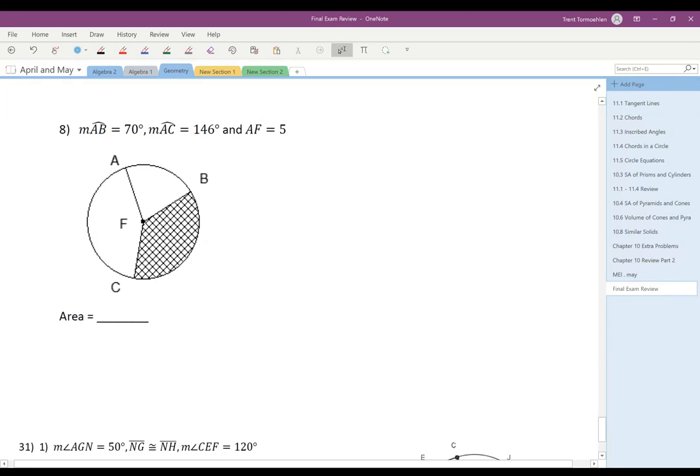For number eight, we have arc AB is 70 degrees and arc AC is 146 degrees. We want to find the area of this sector.